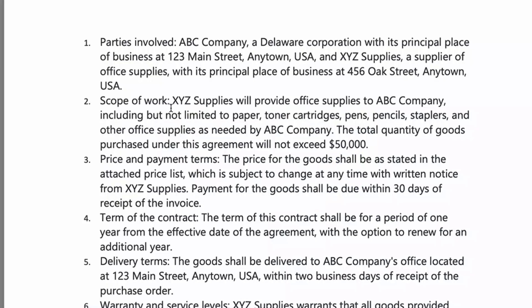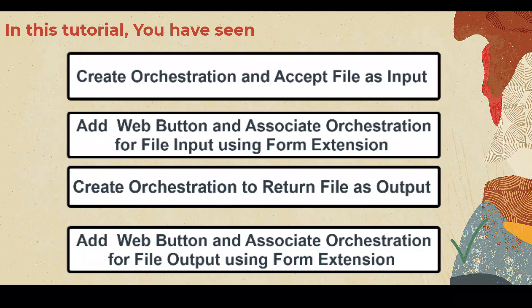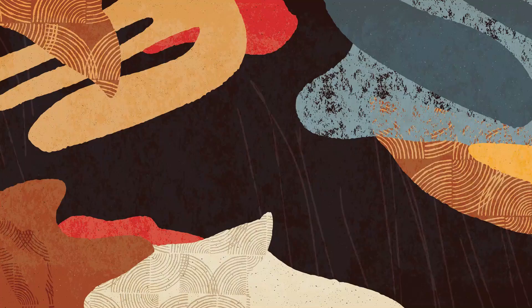Open the downloaded PDF file and verify the purchase agreement. In this tutorial, you have seen how to create an orchestration to add a purchase order, upload an agreement document as an attachment to that purchase order, and launch it from a button on a form extension. You also saw how to create an orchestration to download a file attachment and launch it from a button on a form extension. Hopefully you will imagine even more ways to automate your business by building orchestrations to manage files and launching those orchestrations from form extensions. To learn more about this feature, visit us online at LearnJDE.com.